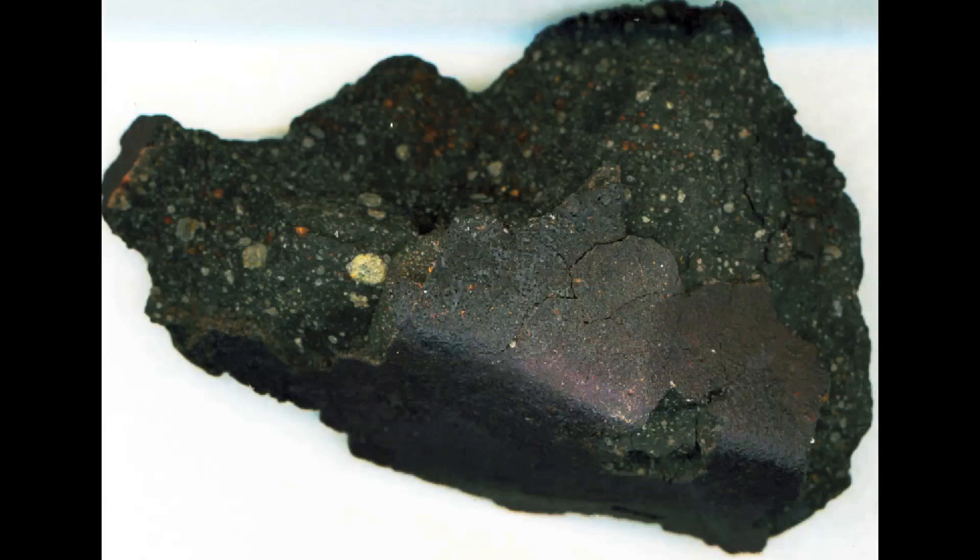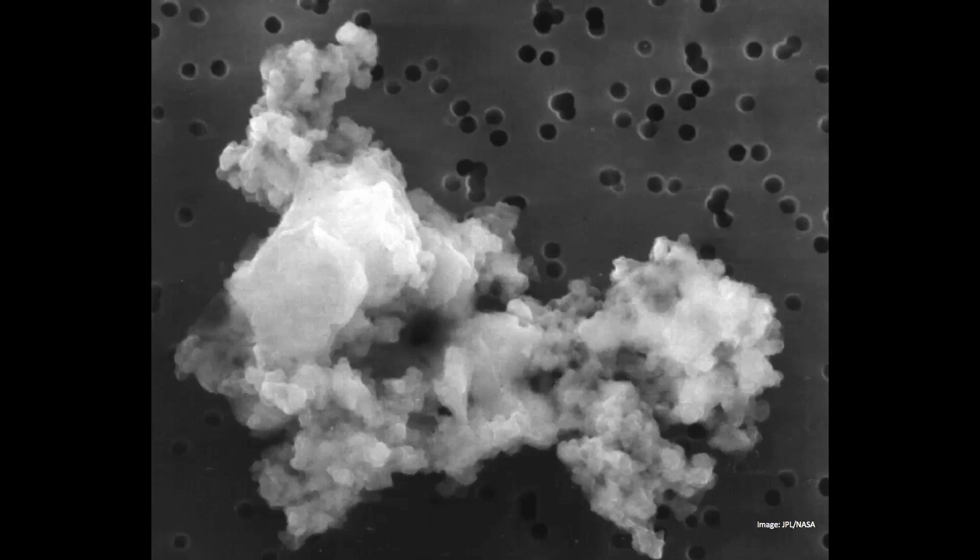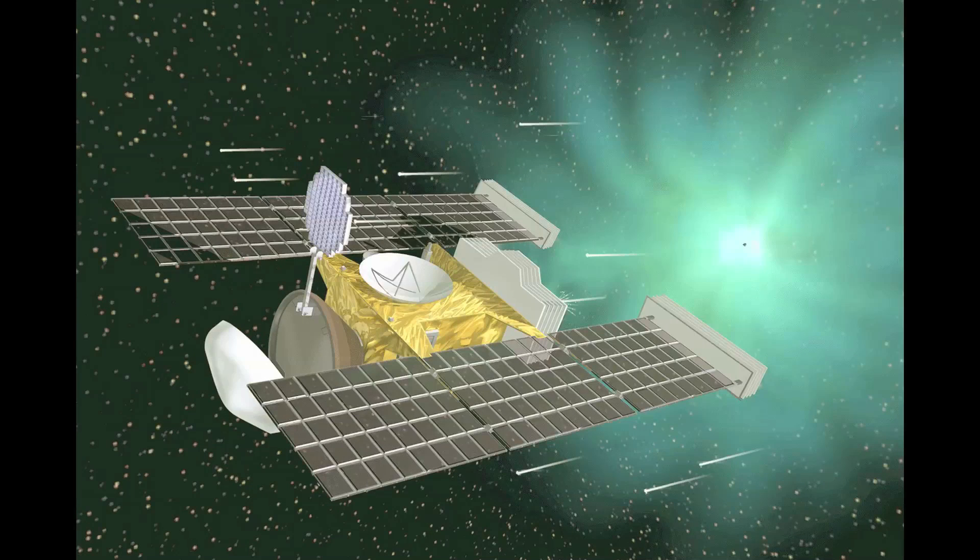Pre-solar matter is found in primitive extraterrestrial materials. So it's mainly unaltered meteorites, meteorites that haven't changed since they formed 4.6 billion years ago. And we also find them in little dust particles that float around in the solar system that come from primitive asteroids or comets. And recently, pre-solar grains have also been discovered in comet dust that was brought back by a spacecraft.